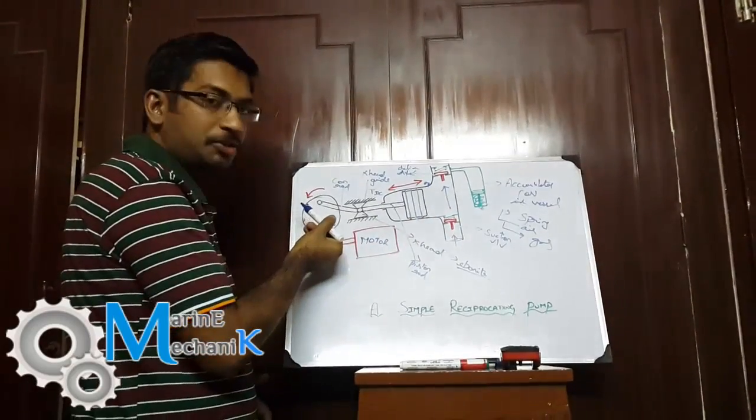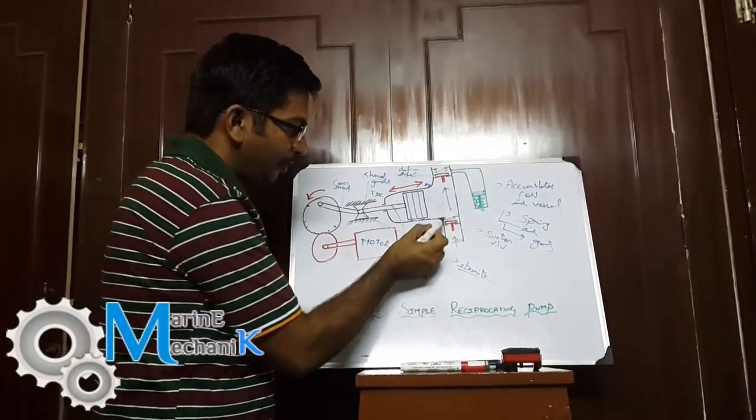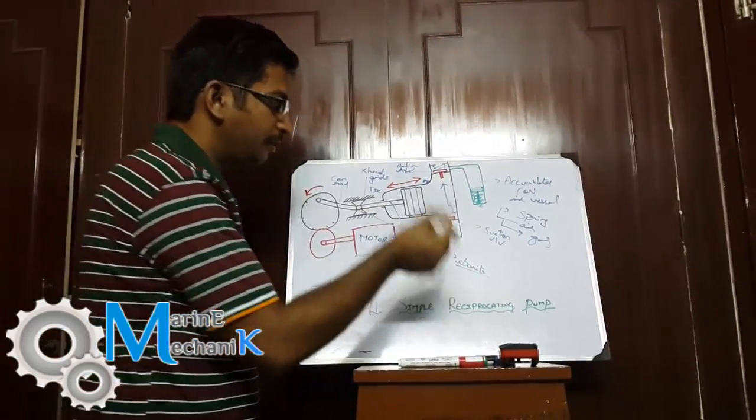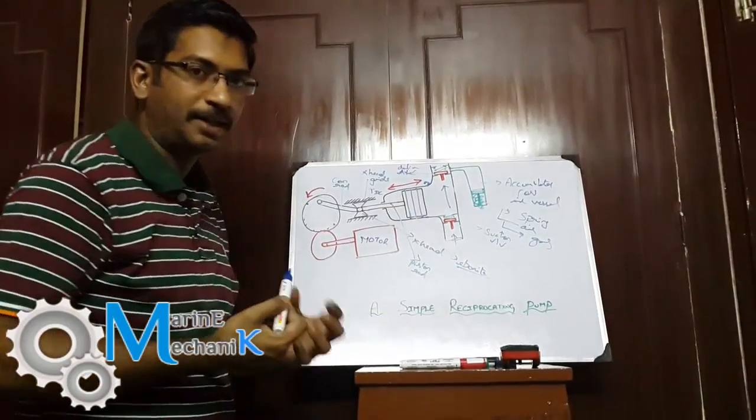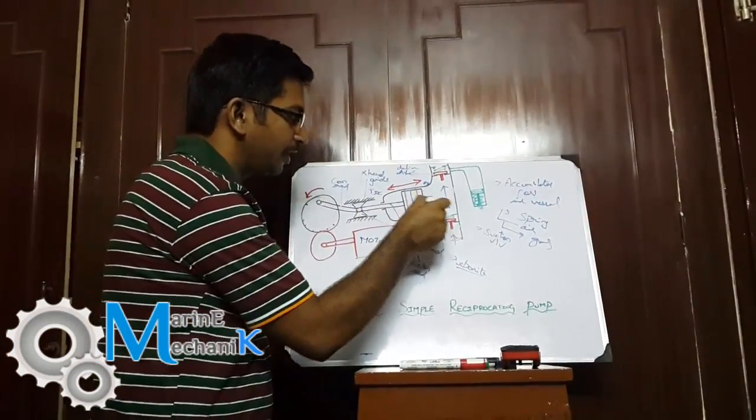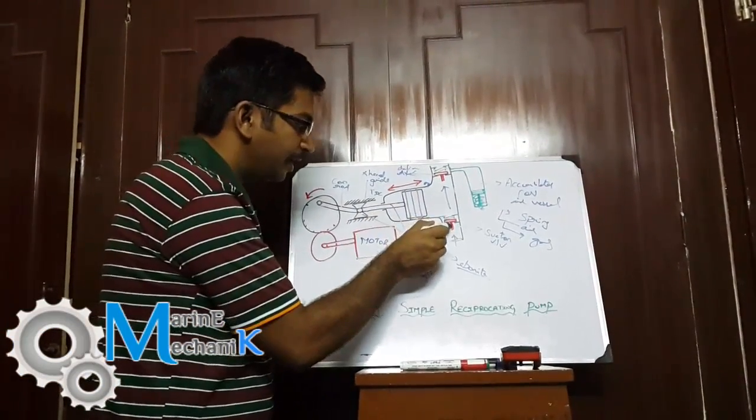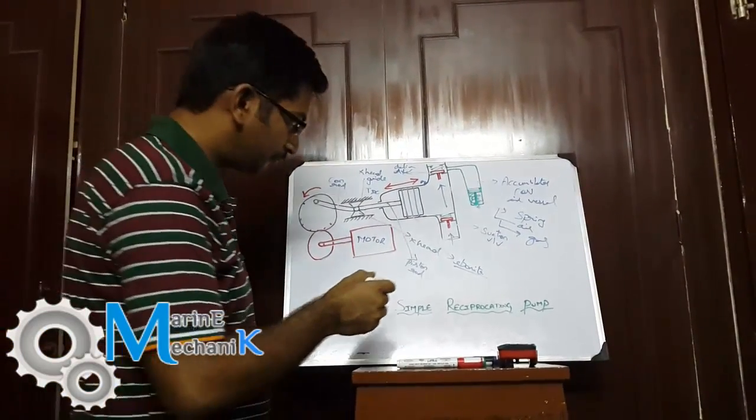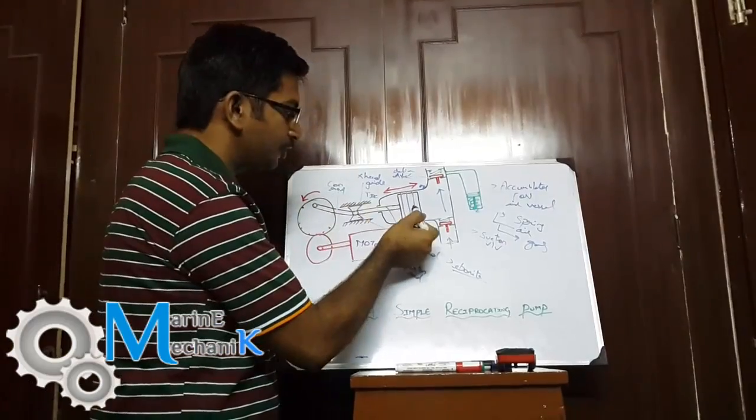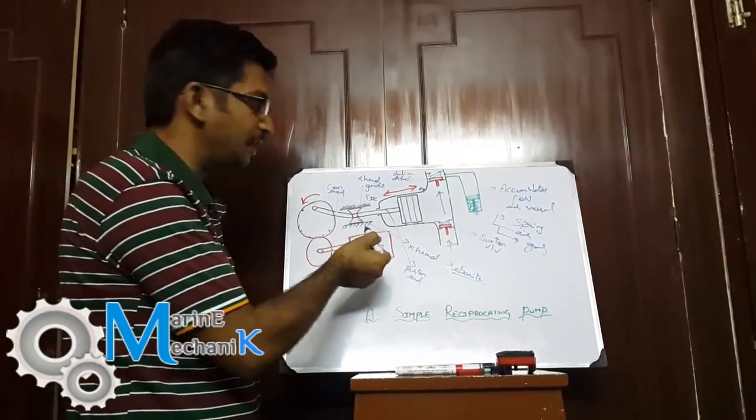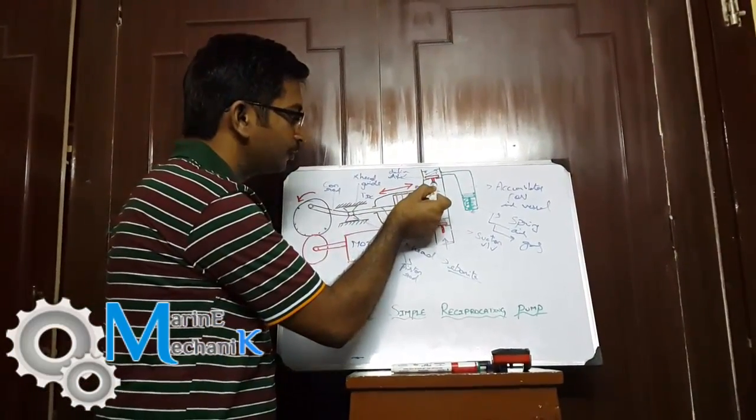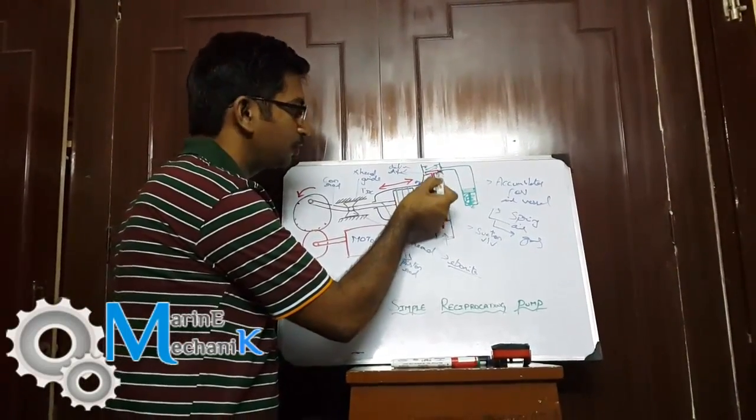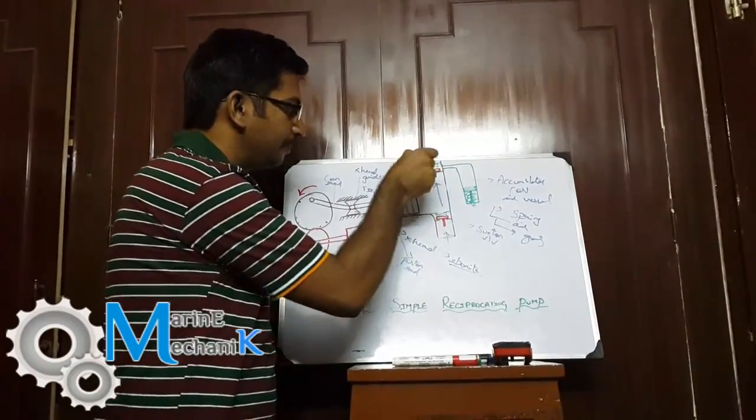If the piston moves towards the top dead center against the spring force, the suction valve lifts so that the water comes in due to the vacuum. It is this vacuum which is created in this chamber that enables the suction valve to lift against the spring force during the suction stroke. The delivery valve is kept closed by the spring.